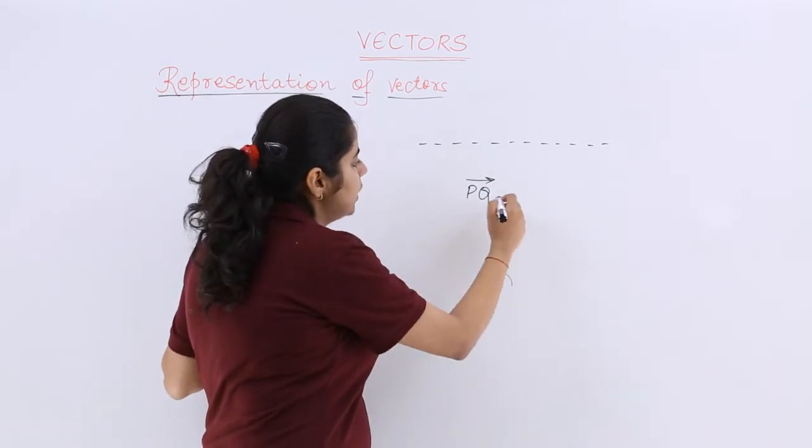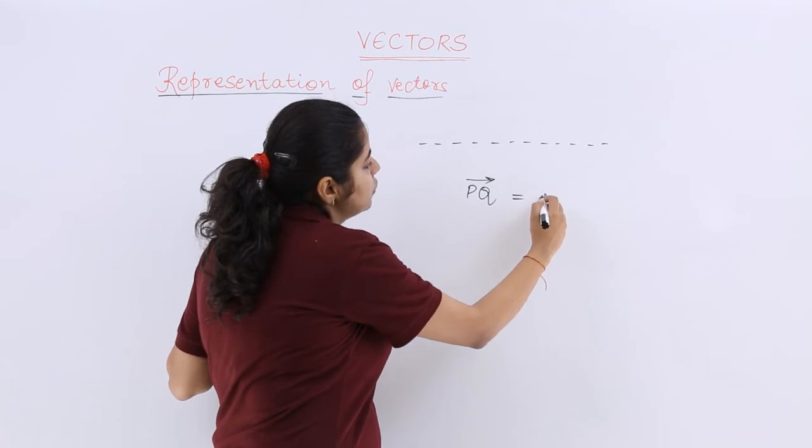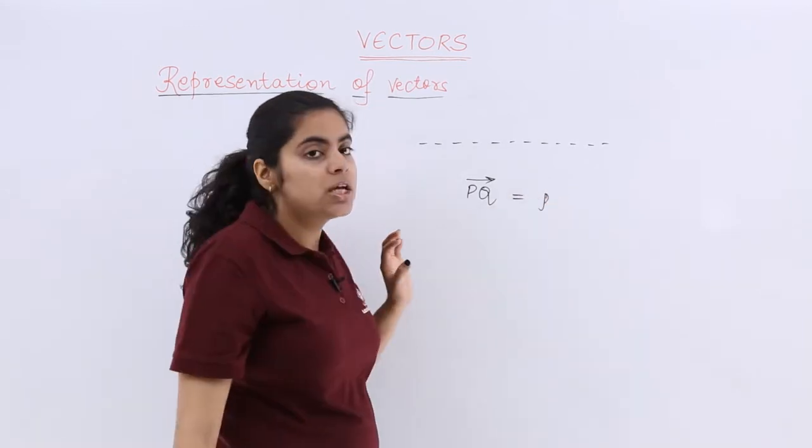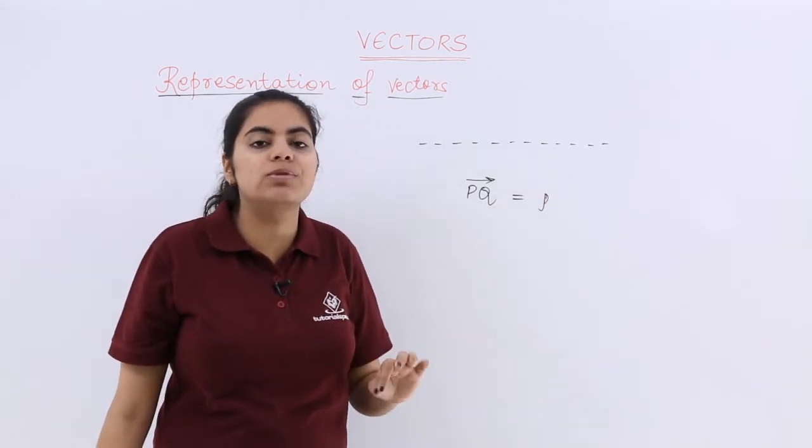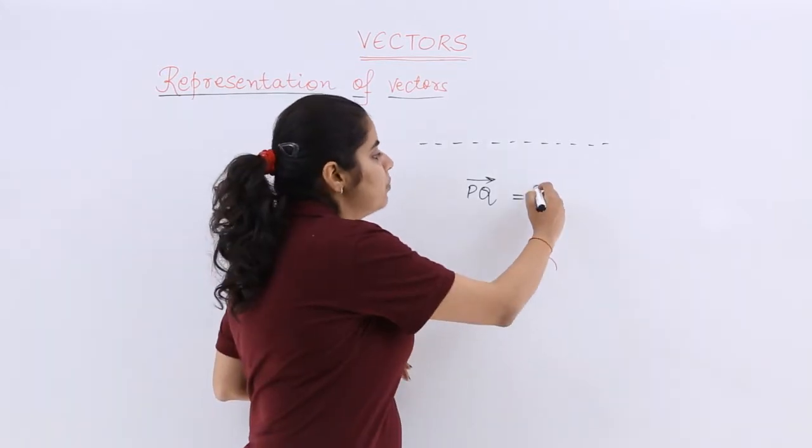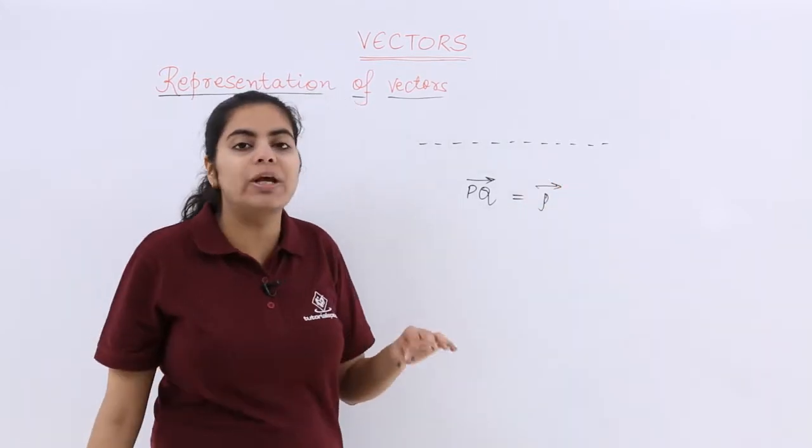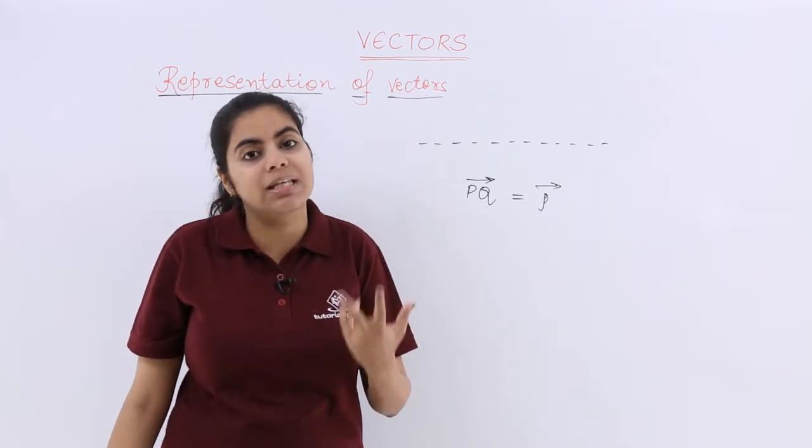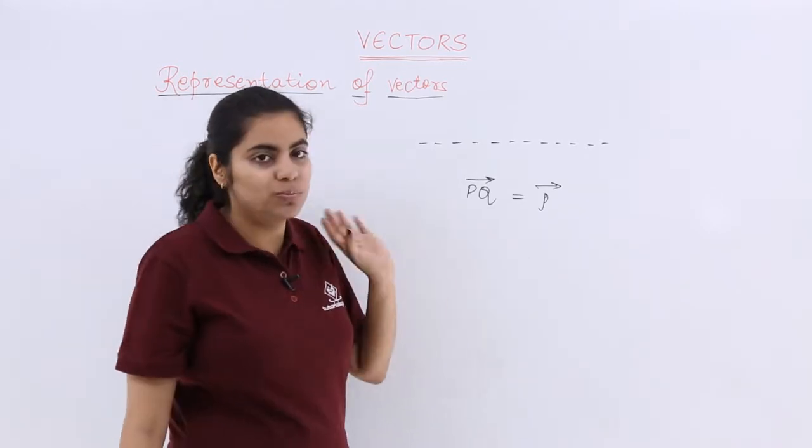This PQ can also be named as a vector with only small p. If you want to name a vector using a small alphabet, only one alphabet is sufficient with an arrow. But if you want to show it using two alphabets, then you have to use capital letters.